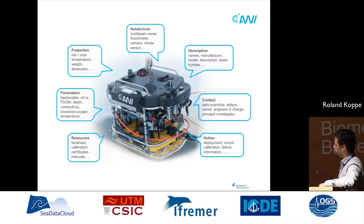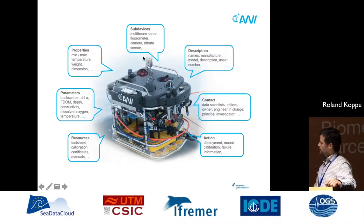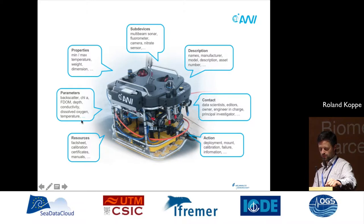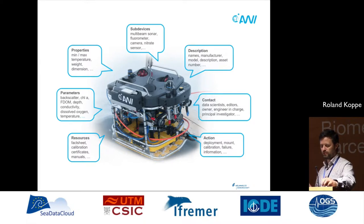As an example, we have a remote operated vehicle called Beast. Such a sensor platform has several aspects which can be described. It has sub-devices — for example, the Beast has a multi-beam sonar, temperature sensors, and so on. It has properties for the whole platform and also for individual devices and sensors. Parameters like measuring temperature. Resources can be aligned like fact sheets and manuals. It has descriptions: manufacturer, model numbers, asset numbers. Contacts are interesting for data scientists, and actions describe what's going on with the platform — all aligned to SensorML.